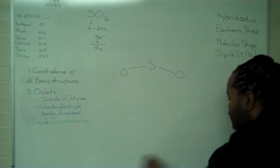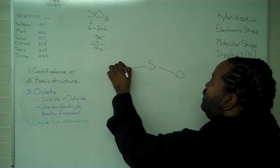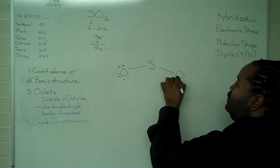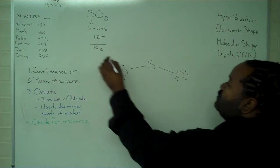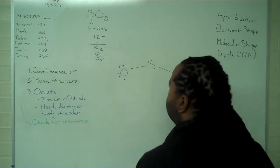At this point, we want to assign octets to both the inside and outside. And we can do so by adding 1, 2, 3, 4, 5, 6, 12 to our oxygens. And those 12 electrons leave us with 2 to work with.